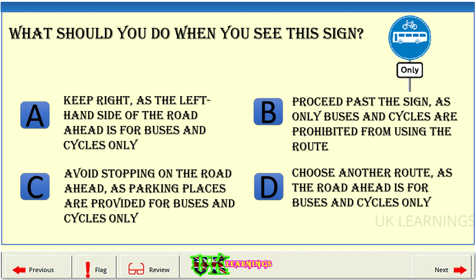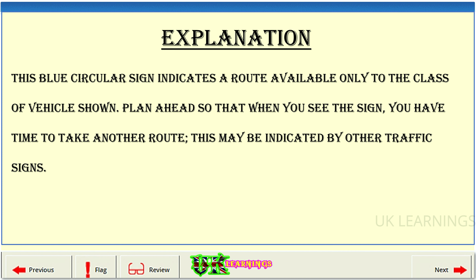What should you do when you see this sign? A: keep right, as the left-hand side of the road ahead is for buses and cycles only. B: proceed past the sign, as only buses and cycles are prohibited from using the route. C: avoid stopping on the road ahead, as parking places are provided for buses and cycles only. D: choose another route, as the road ahead is for buses and cycles only. The correct answer is D: choose another route, as the road ahead is for buses and cycles only. Explanation. This blue circular sign indicates a route available only to the class of vehicles shown. Plan ahead so that when you see the sign, you have time to take another route. This may be indicated by other traffic signs.